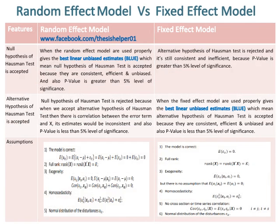When the null hypothesis of the Hausman Test is accepted, it means the Random Effect Model is used properly and gives the best linear unbiased estimates (BLUE), meaning estimates are consistent, efficient, and unbiased, and the p-value is greater than 5% level of significance. When the alternative hypothesis of the Hausman Test is accepted, the null hypothesis is rejected because there is correlation between the error term and X, making estimates inconsistent, and the p-value is less than 5% level of significance.